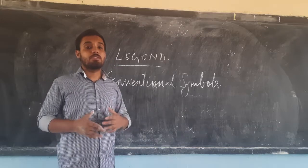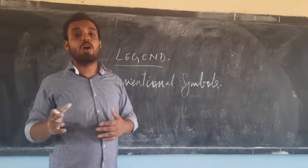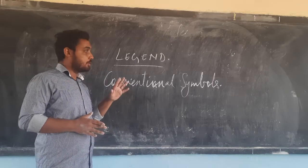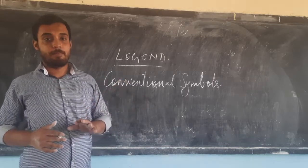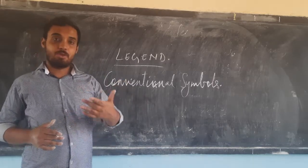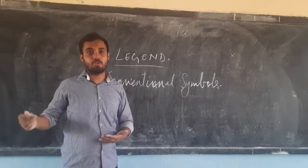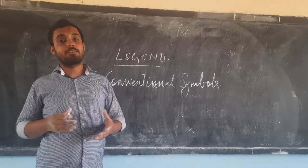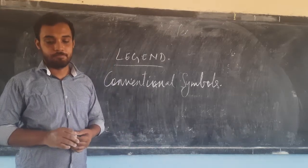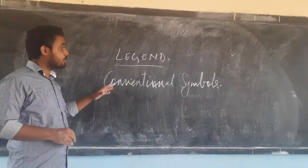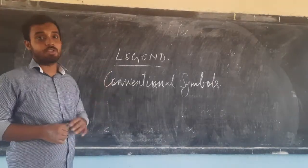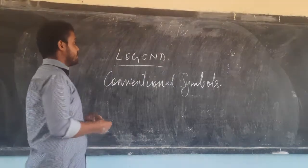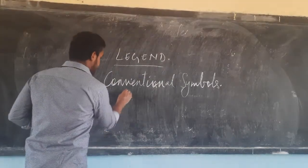These are called conventional symbols and they are accepted internationally — meaning they are accepted throughout the globe. The symbols never change. Even though the color and structure may vary, the symbols are more or less the same in each and every map. So that was about legend. The next topic is grid.